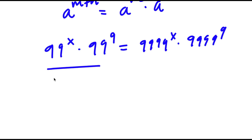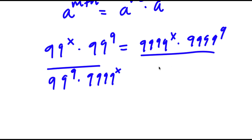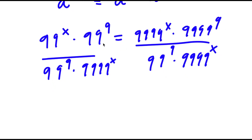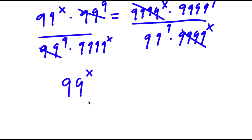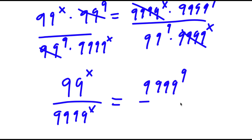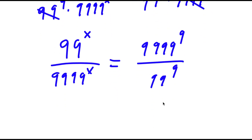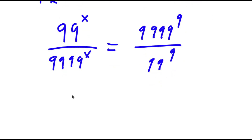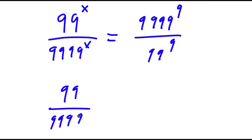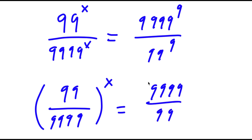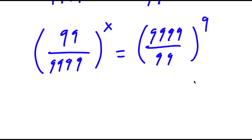Now I'm going to divide both sides by 99 to the power of 9 times 9,999 to the power of x. So these two cancel out from my left-hand side and these two cancel out from my right-hand side. So now I have 99 to the power of x over 9,999 to the power of x is equal to 9,999 to the power of 9 over 99 to the power of 9.